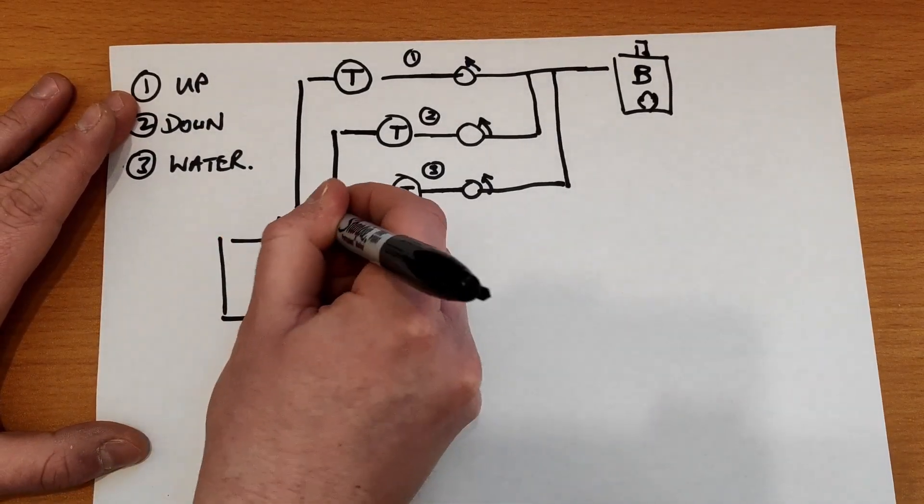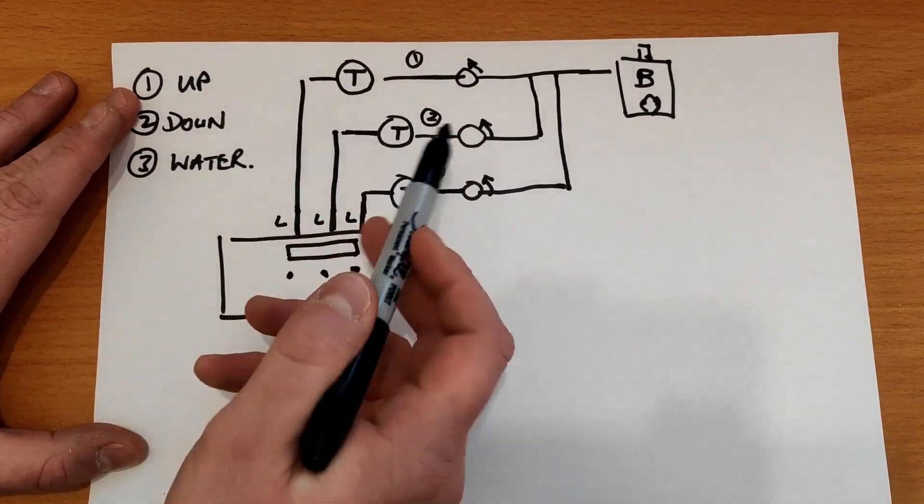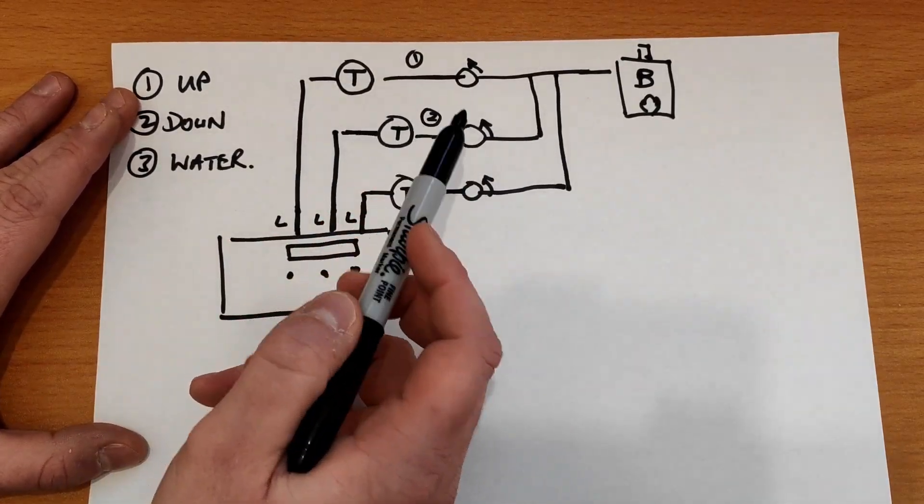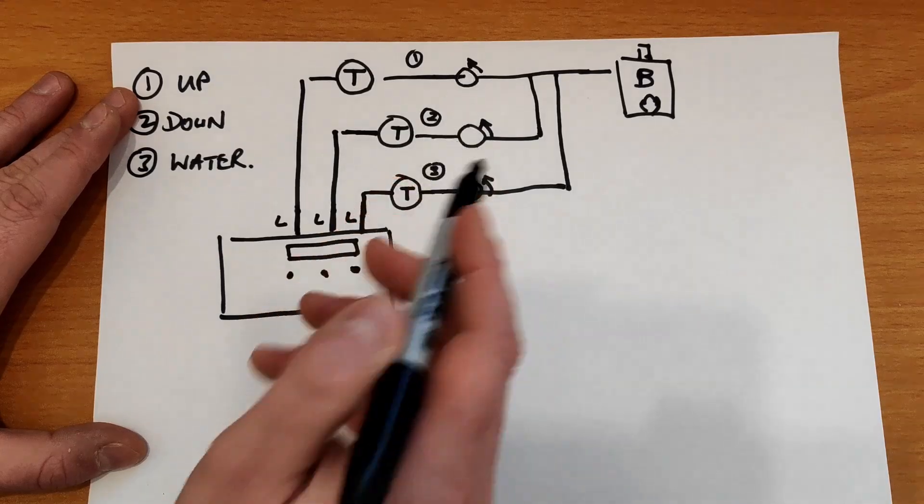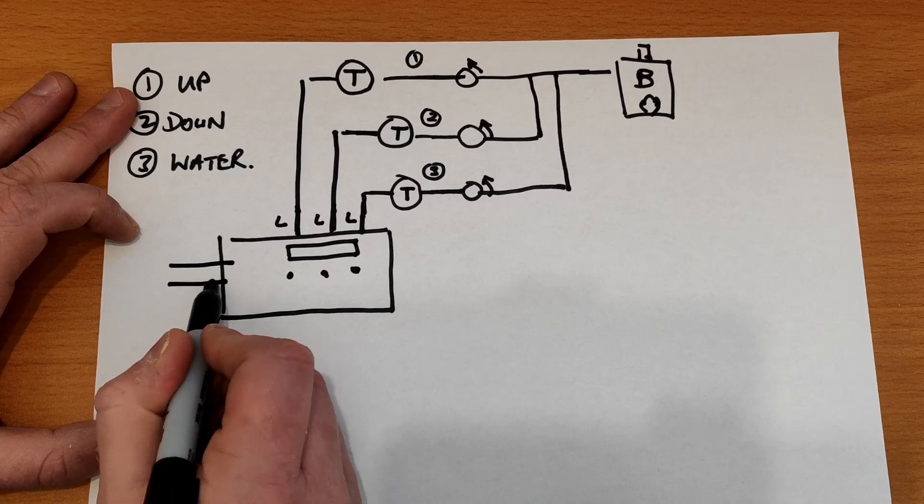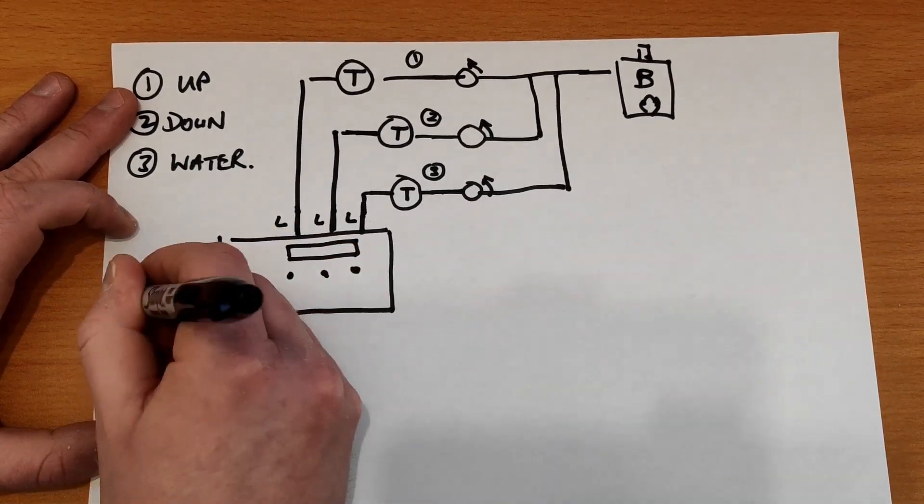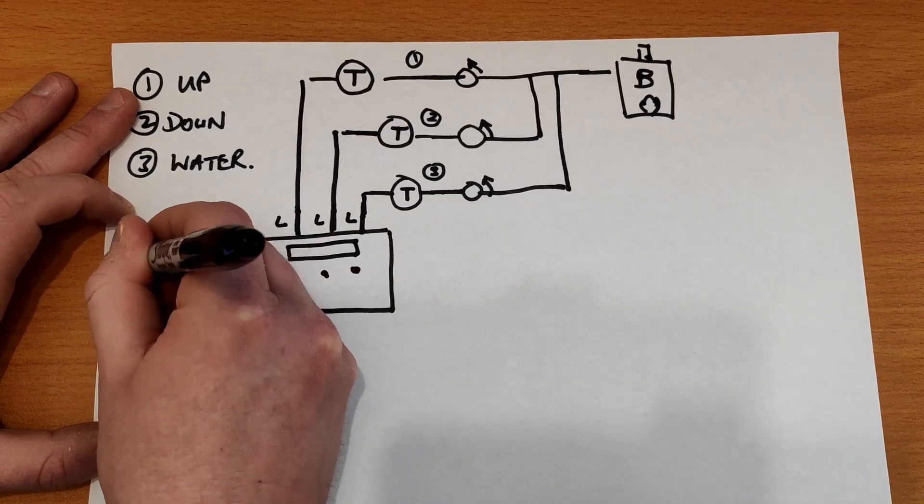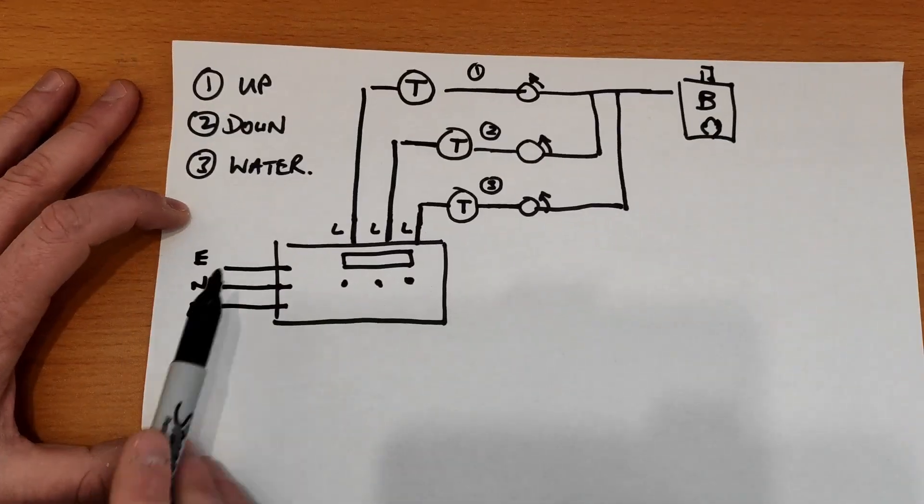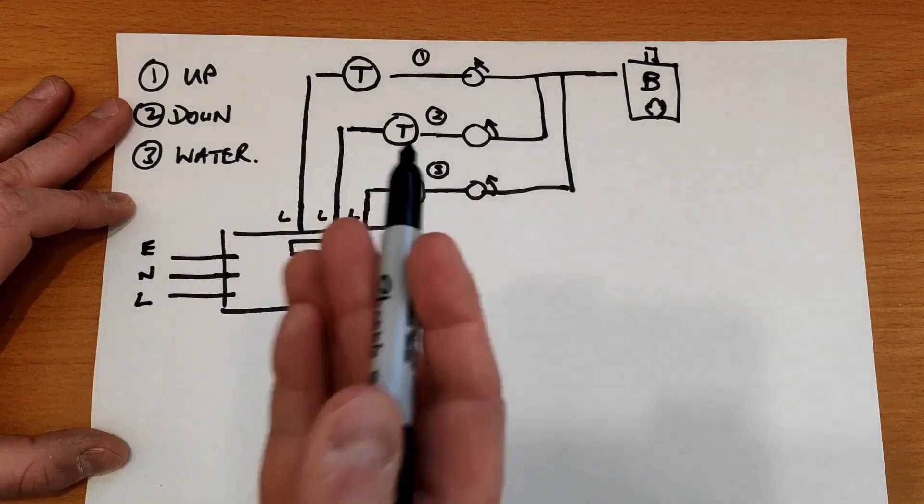So the way to think about this is that these are all live signals that get sent through the thermostats to each of these valves. Then what you have is the actual power that goes to the controller: a live and neutral and an earth that comes into the controller.